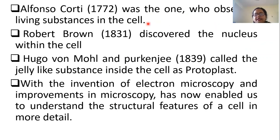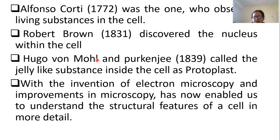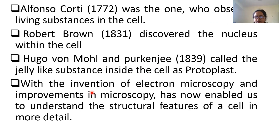Next is Robert Brown, in 1831, who discovered the nucleus within the cell. The name of Hugo von Mohl and Purkinje also comes — in 1839, they called the jelly-like substance inside the cell as protoplasm. So the living substance observed by Alfonso Corti inside the cell was named protoplasm by Hugo von Mohl and Purkinje. With time, the invention of electron microscopy and other advancements in microscopy have enabled us to understand the structural features of a cell in more detail.